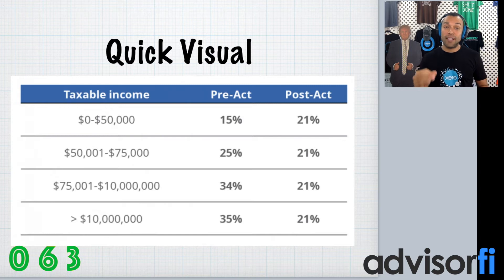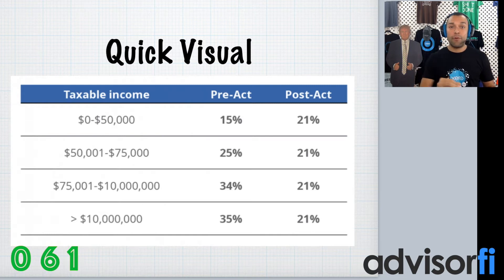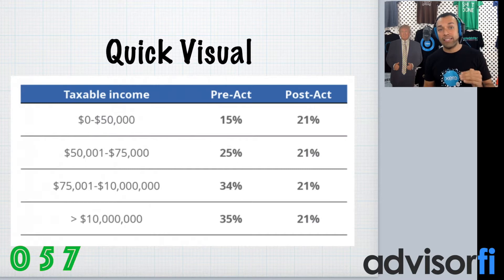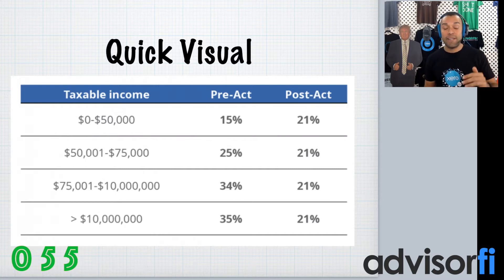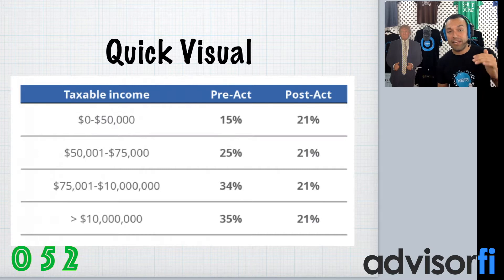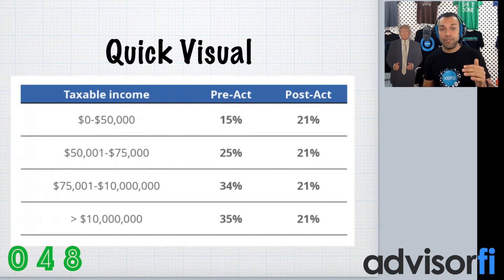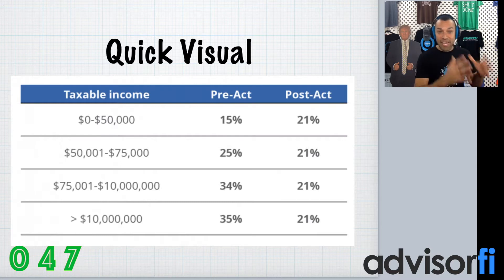So here's a quick visual for you guys. I want to show you before the tax reform and the effects after the tax reform. As you can see here, there were four graduated tax brackets for C corporations: as little as 15% for the first $50,000 of taxable income, then 25%, then 34%, then all the way to 35%.